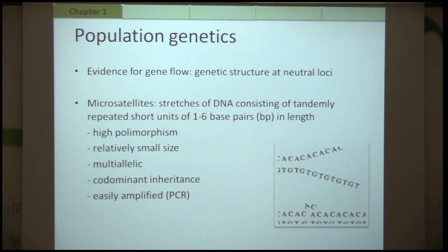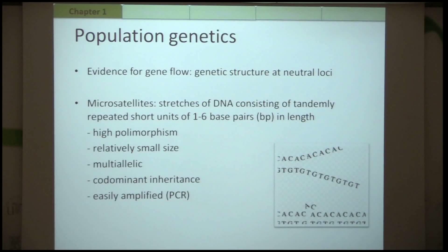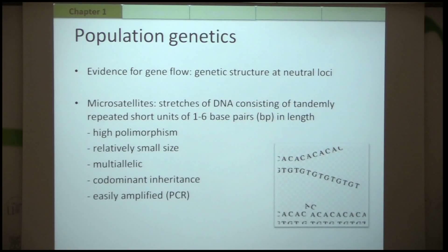We are also interested in the extent of gene flow across those populations. To analyze this, we are incorporating neutral markers — microsatellites — which are stretches of DNA of one to six base pairs that are relatively small in size, highly polymorphic, and due to their multiallelic nature, codominant inheritance, and easy amplification by PCR, they are widely used for population genetic studies. With this, we will be able to assess what factors drive the intraspecific size variation in Bufo calamita.